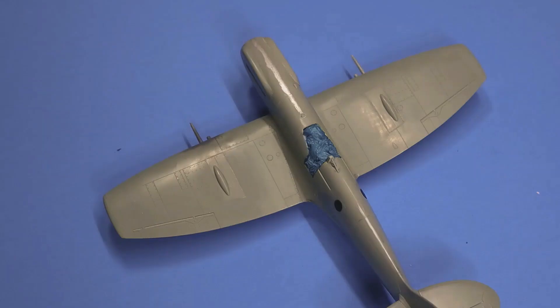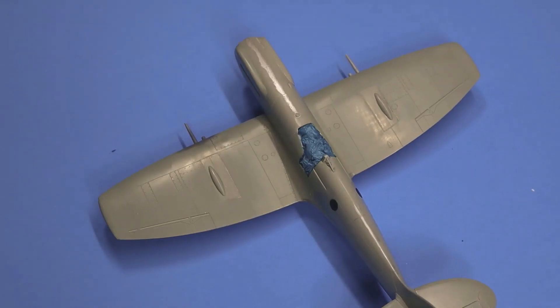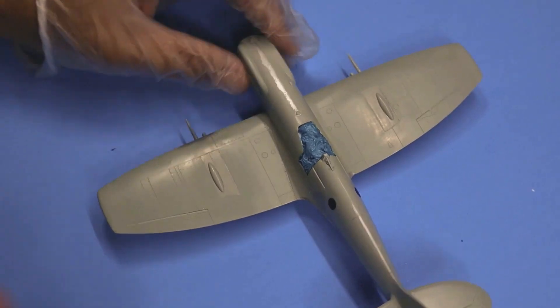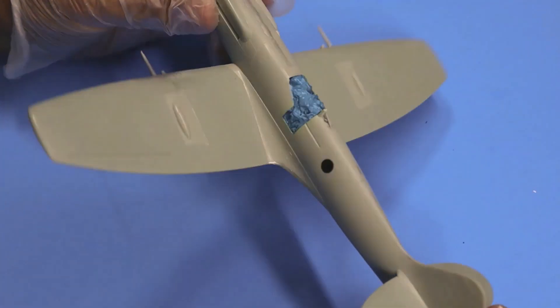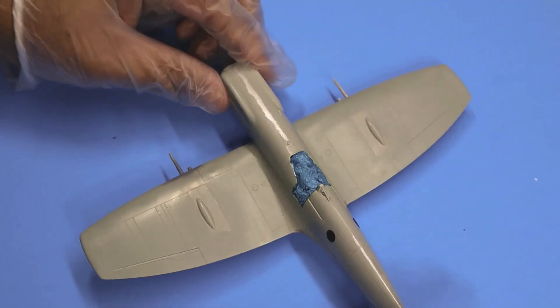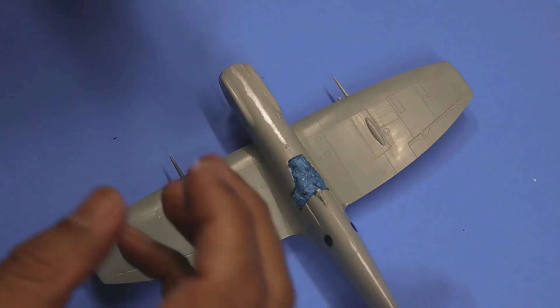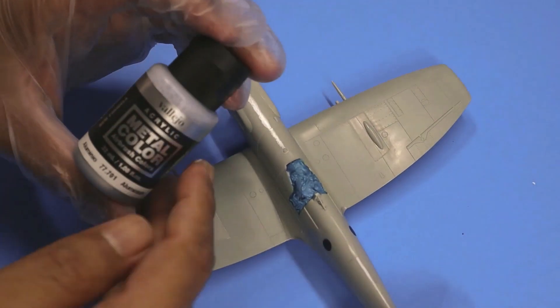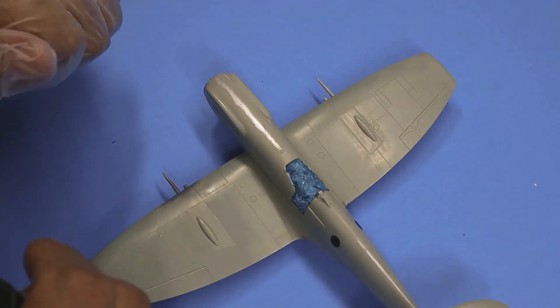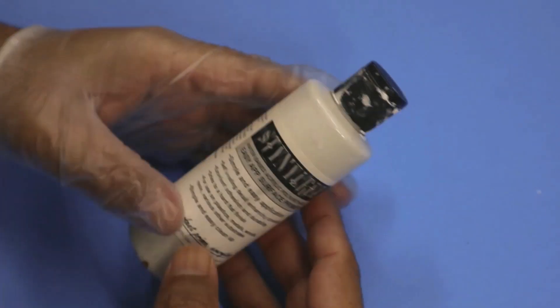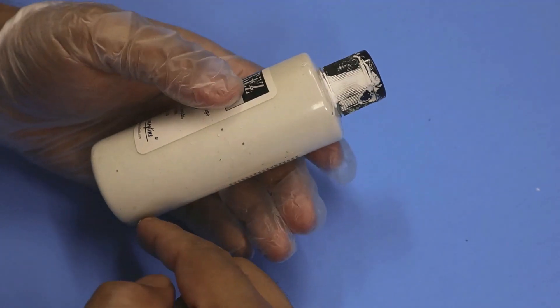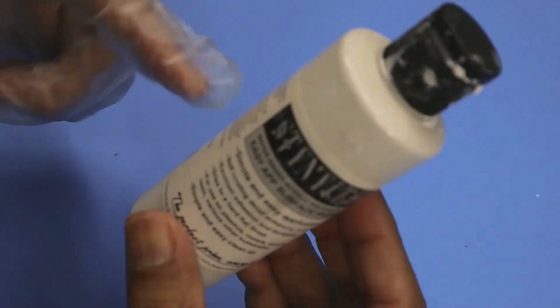Hey everyone, welcome back to my channel. In this video we're going to do a natural metal finish using Vallejo metal colors. I recently purchased these metal color paints from Vallejo and I'm really impressed by them. I've done a couple of builds using the Vallejo metal colors. I'm going to walk you through step by step on how to use them, what to do to get the best results. This is going to be a full tutorial video on getting a natural metal finish.